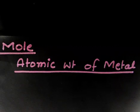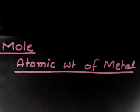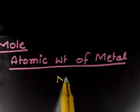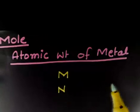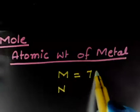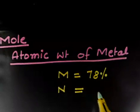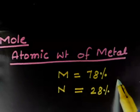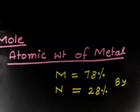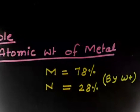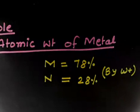This is an easy problem. A compound contains 28% nitrogen and 78% metal by weight. So we have a compound that contains metal and nitrogen. The percentage of metal is 78% and the percentage of nitrogen is 28% — these are given as percentages by weight.